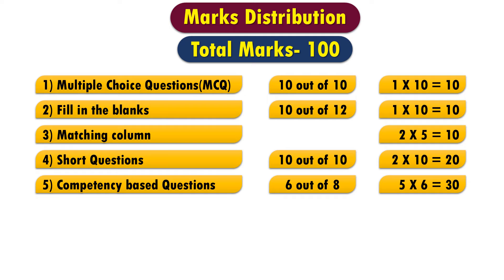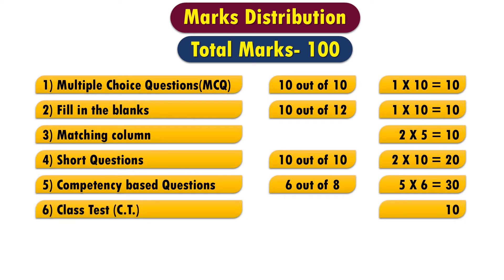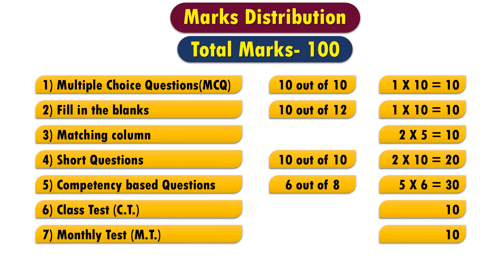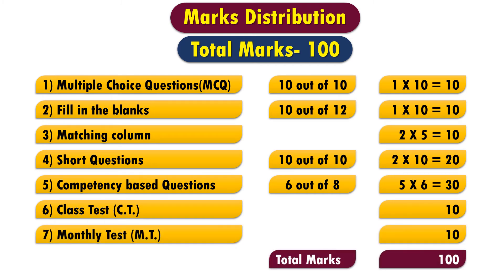Then you have to answer the competency-based question. This is a question with three or more different parts. You have to answer 6 out of 8, and every question is worth 5 marks — 5 × 6 equals 30 marks. You will also get 10 marks in the class test, known as the CT exam, and 10 marks in the monthly test, known as the MT exam. In total, we have 100 marks.